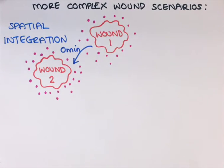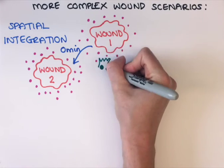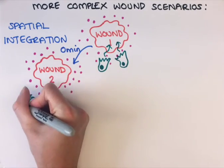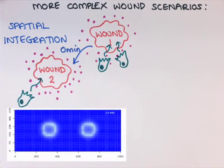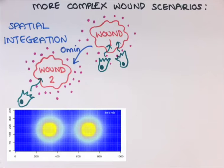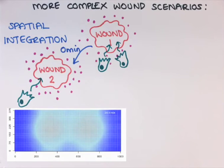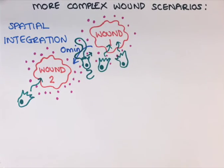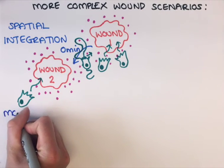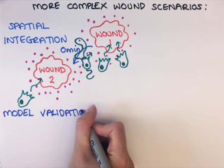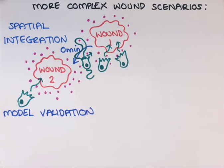Whilst two wounds close together would act as a single large wound, and two wounds far apart would act as two completely separate wounds, the modelling predicted that two wounds made at exactly 330 micrometres apart would cause immune cell confusion in the inter-wound region, as the two attractant gradients would overlap and cancel each other out. When we tested these different wound scenarios in vivo experimentally, the predictions held true, helping to validate our single wound model.